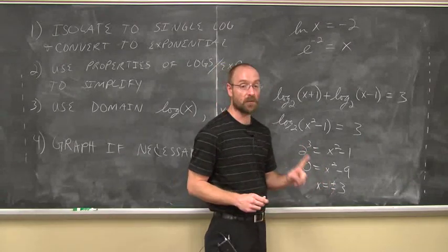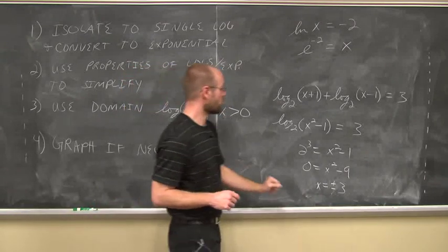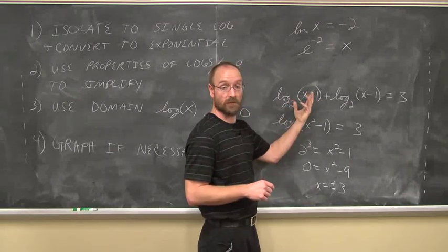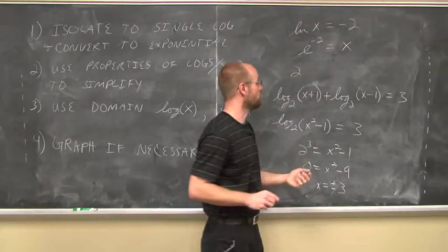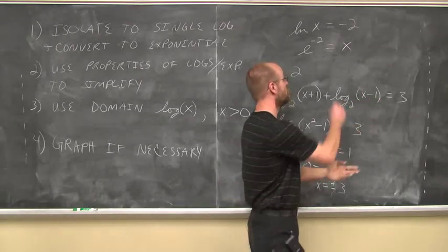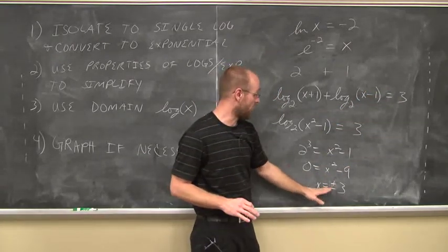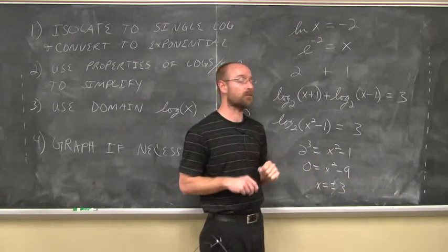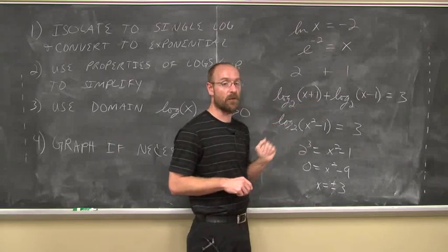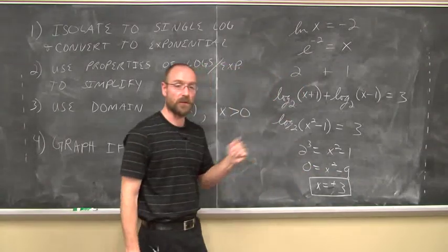Do these values fall within my domain? If I put in a positive 3, 3 plus 1 is 4. Log base 2 of 4, well, 4 is just 2 squared, so this value is 2. If I put in positive 3, just like I did here, 3 minus 1 is 2. Log base 2 of 2 reduces to 1. 2 plus 1 is, in fact, 3. So I didn't violate any domain. I know that x equals a positive 3. But what happens if I check the negative 3? Negative 3 plus 1 is negative 2. The log of a negative is not within the domain, so my negative doesn't work. Just x plus 3. So make sure you check that domain.